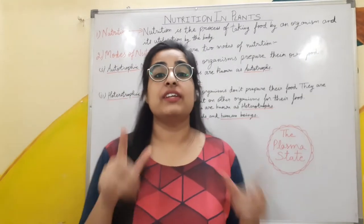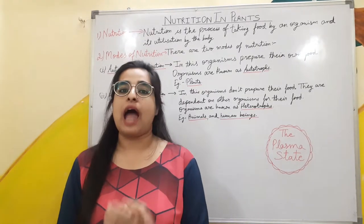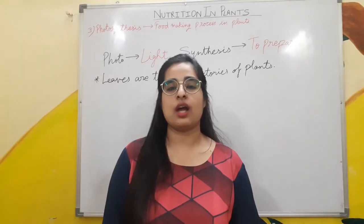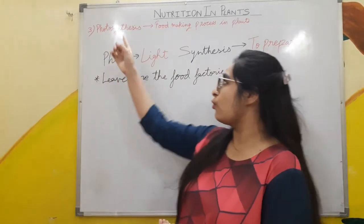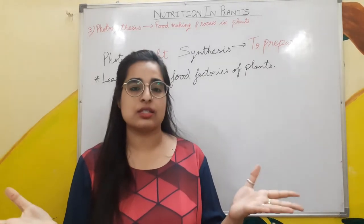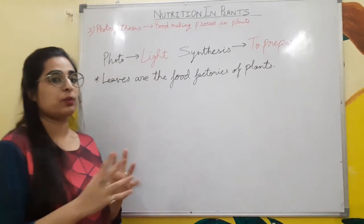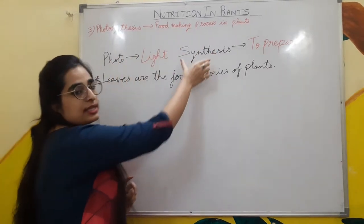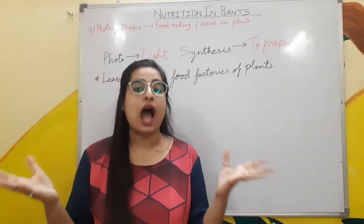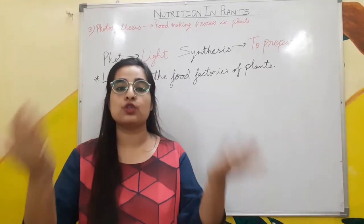Today we will discuss how plants prepare their food and where they prepare their food. We will start with the topic photosynthesis. Photosynthesis is the food making process in plants. If we divide this word, it becomes photo and synthesis — photo means light and synthesis means to prepare. Leaves are known as the food factories of plants, meaning leaves prepare the food for plants.